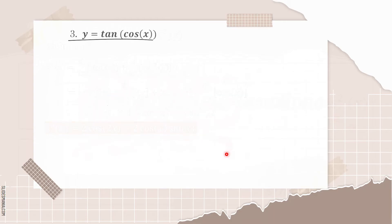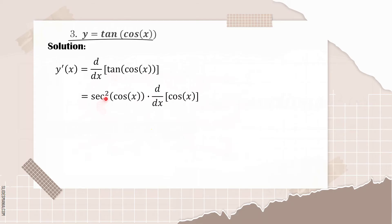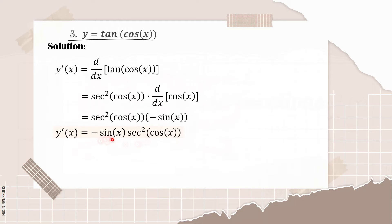Next is our third given, which is y is equal to tangent of cosine of x. To solve it, we find the derivative of tangent first, then copy cosine of x, and multiply by the derivative of what's in the parenthesis. The derivative of tangent is secant squared, so we copy cosine of x, and the derivative of cosine of x is negative sine of x. Therefore our answer is negative sine of x times secant squared of cosine of x.